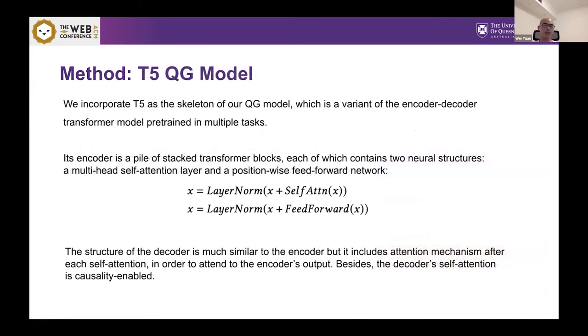Our QG model is based on T5, which is a very popular large pre-trained language model. It has an encoder and decoder. The encoder is a pile of stacked transformer blocks which contains two neural structures, a multi-head self-attention and a position-wise feed-forward network. The structure of decoder is much similar to encoder except that it has causal attention to alleviate information leaking.